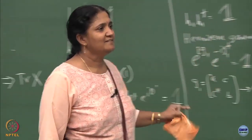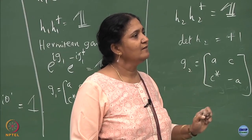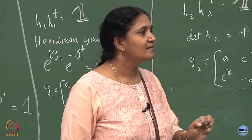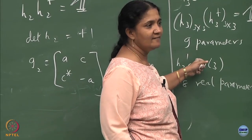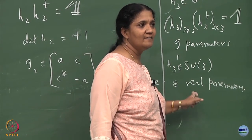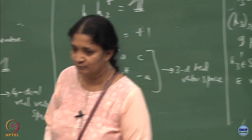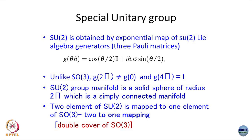The number of basis elements in the Lie algebra for a specific group equals the number of parameters. For the U3 group there will be 9 elements in the Lie algebra, and for SU3 there will be 8 elements. This is the warm-up on SU2 before extending the same logic to other groups.